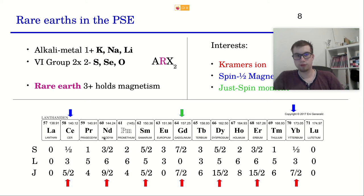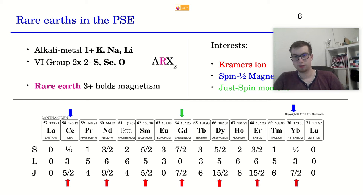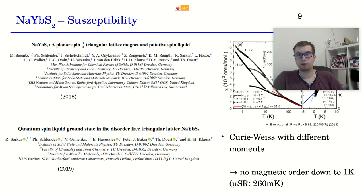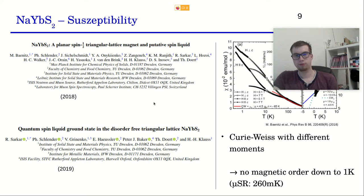I want to present two different materials: one has an antiferromagnetic ground state and one has a quantum spin liquid ground state, which are the two basic possibilities in these materials. I want to start with the first one, which is sodium ytterbium sulfide (NaYbS₂), referring to these two papers.